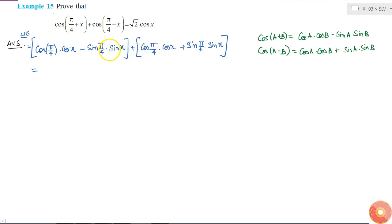If I add them what will I get? Sin pi by 4 into sin x will get cancelled from both the brackets. And these two are same, so it is 2 into cos pi by 4 into cos x.